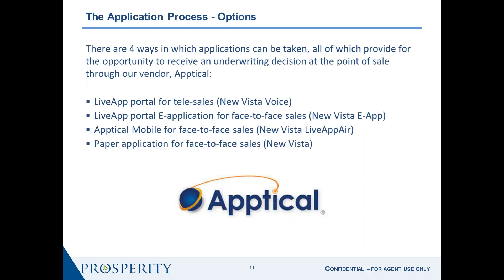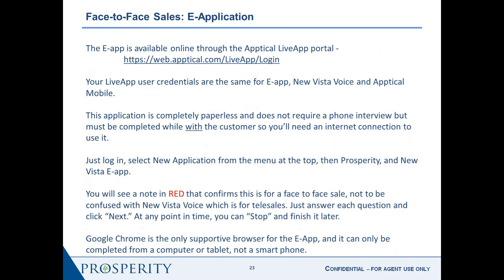The e-application for face-to-face uses a new technology you can download and install called Live App Air. These are the methods for writing applications electronically. Make sure you complete all information and verify all of the client's information. In the event that you get a counter offer, unlike the voice option where the interviewer aids you, you will be the interviewer here, so the system will prompt you with the steps.